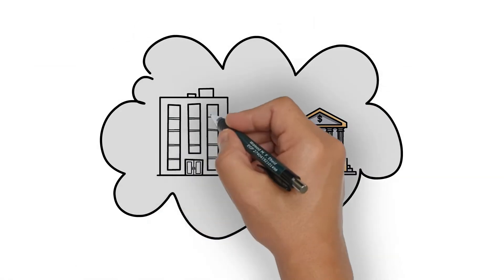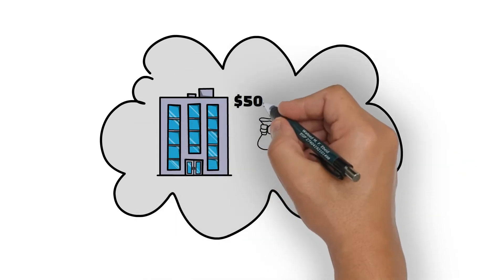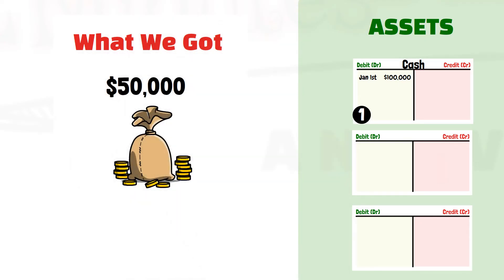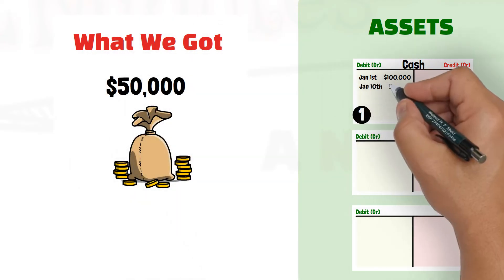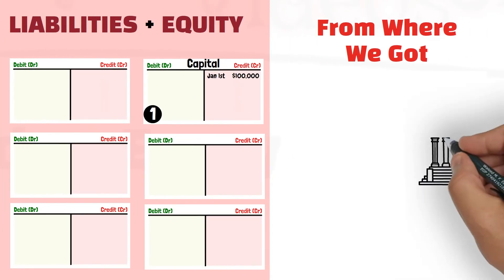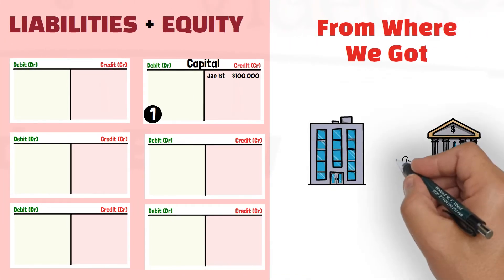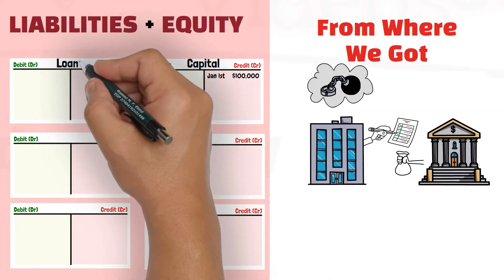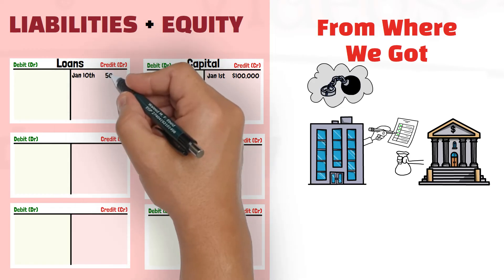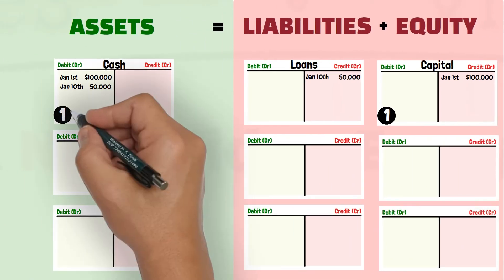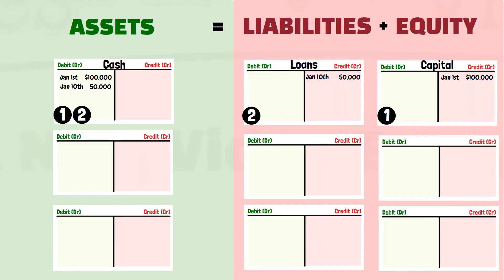Assume that the business was granted a 50,000 loan from a bank. The resource that the business got is the cash of 50,000, and that increase in cash is debited to the cash account, which is an asset account. The business got that cash from the bank as a loan, so there is an obligation to the bank for the amount of this loan, which should also be recorded. Therefore, the loan account on the liability side is increased or credited by 50,000 to reflect that obligation. Also, this transaction was recorded in two accounts.